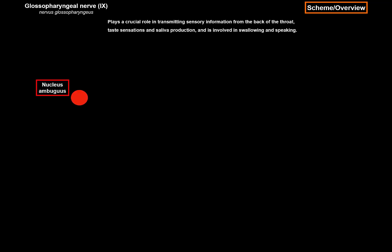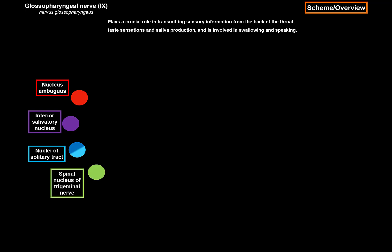We have the nucleus ambiguus, which is a motor nucleus; the inferior salivatory nucleus, which is parasympathetic; the nucleus of the solitary tract, which is functionally divided into a viscerosensory part and a gustatory part for taste; and the spinal nucleus of the trigeminal nerve, which is somatosensory. Nerves go in and out through the medulla on the lateral aspect of the olive, called the retroolivary groove, carrying motor, parasympathetic, and sensory components.